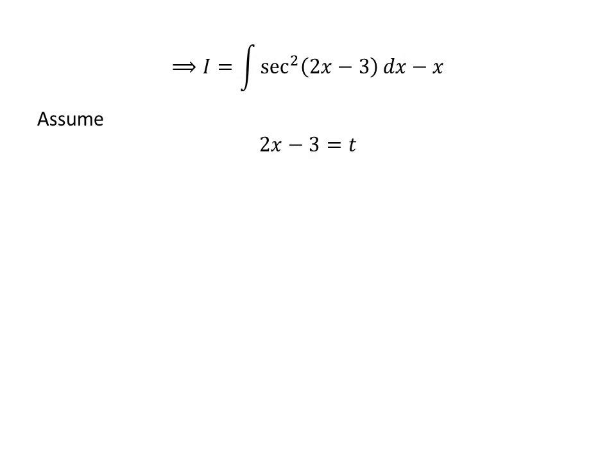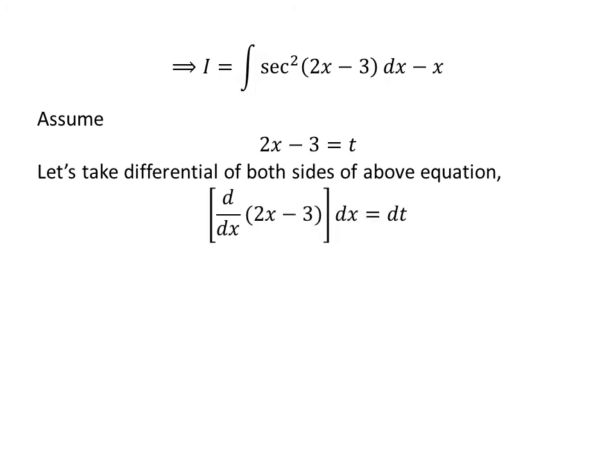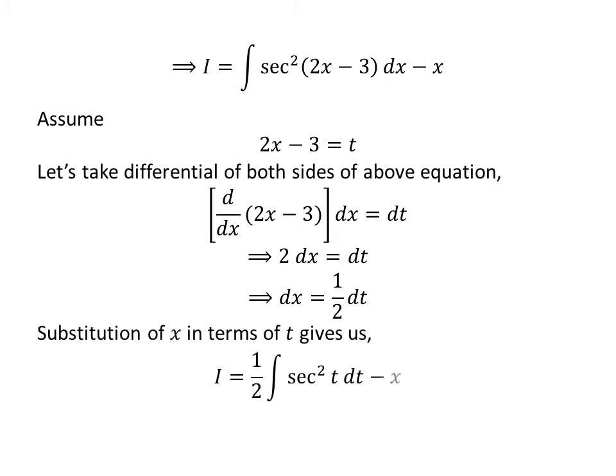To simplify the integral of square of sec of 2x minus 3, we apply the substitution method. Let 2x minus 3 equal t. Taking the differential of both sides, the derivative of 2x minus 3 with respect to x is 2, so 2 dx equals dt, giving us dx equals half dt. Substituting, i becomes half times the integral of square of sec of t with respect to t, minus x.